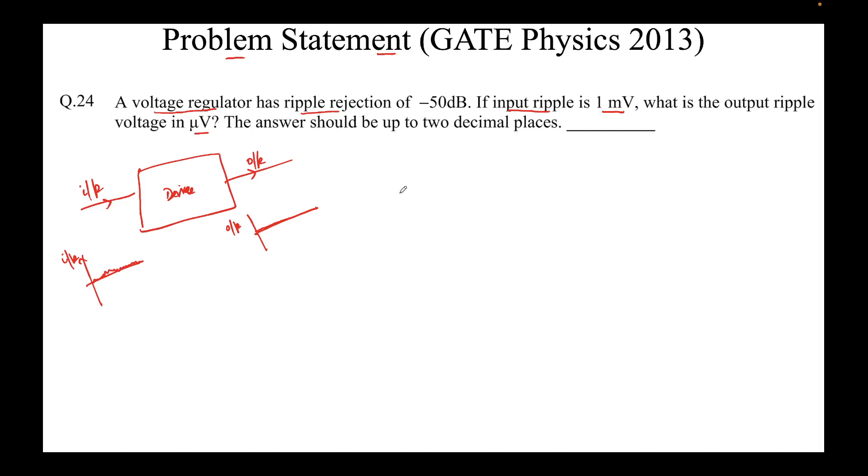We can write that mathematically this is expressed as ripple rejection. Now, it is usually measured in dB. So, it is 20 log v_out by v_in, the magnitude of it. So, the more negative the ripple rejection, the better it is because the more noise will be suppressed.